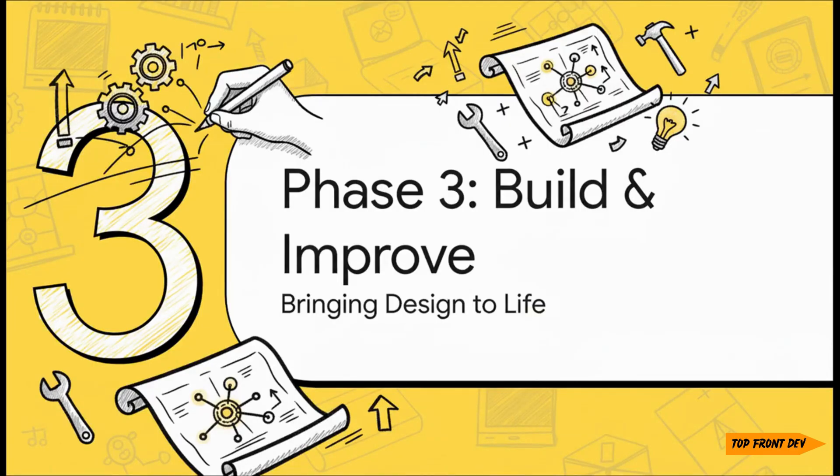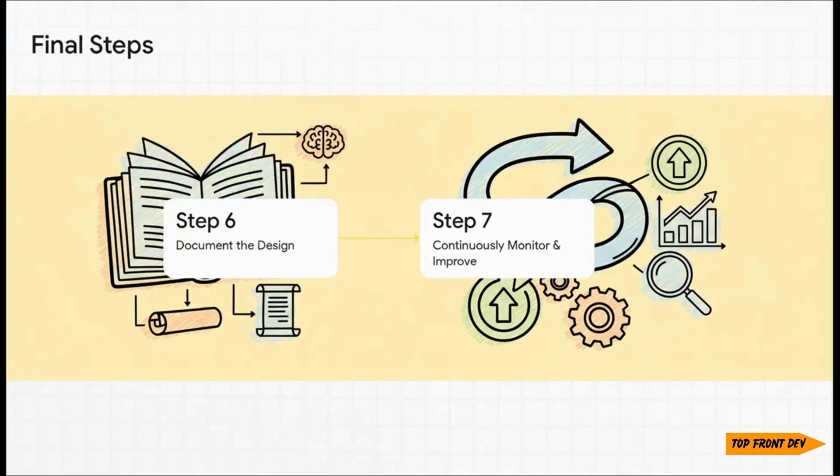On to phase three: Build and improve. Because, let's face it, a design document is pretty useless if it just sits in a folder collecting digital dust. This phase is all about taking that blueprint and turning it into a real, living system that can keep evolving over time. These final two steps are, I would argue, the most important for the long-term health and success of your system. It's not just about getting it launched. It's about making sure it's understandable and adaptable for years to come.